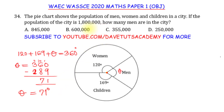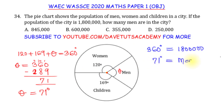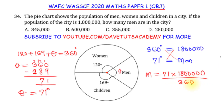The total population is 1.8 million. Now, the total population corresponds to the whole of the pie chart, and that whole pie chart is relatable to 360 degrees. So 360 degrees corresponds to 1.8 million. But now I'm looking for the number of men, for which I found the angle to be 71 degrees. I can cross-multiply such that men equals 71 times 1.8 million divided by 360 degrees.